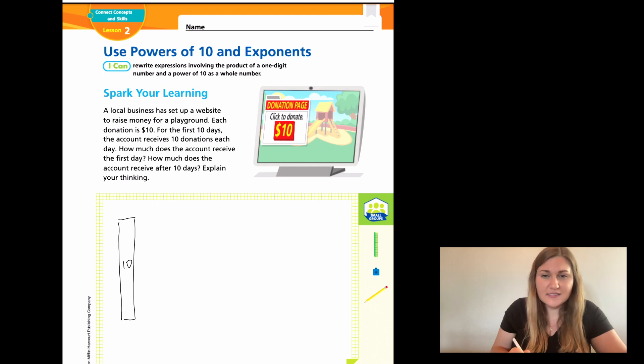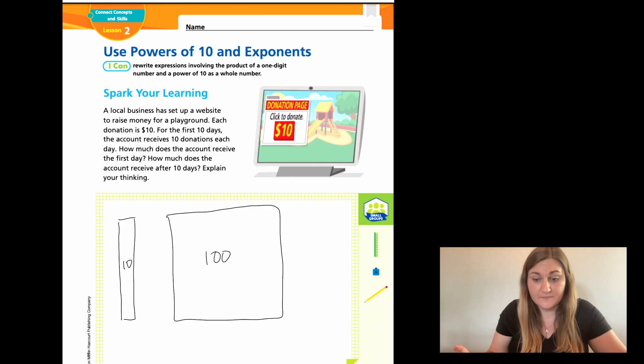So if I could sit here and I could do 10 longs, another way I can do this is called a flat. So it's just a really big square. And this represents 100. So this is 10 longs is a flat worth 100. So this would be one day.